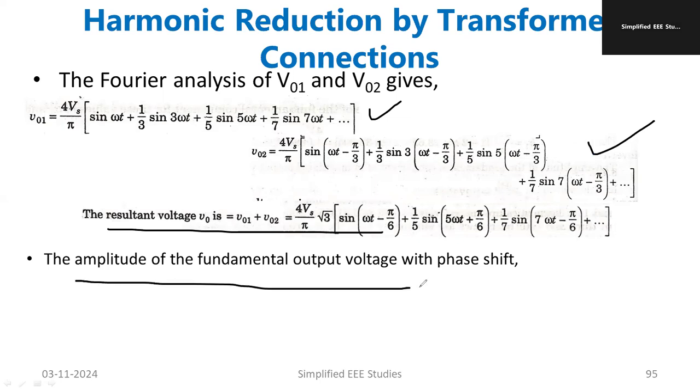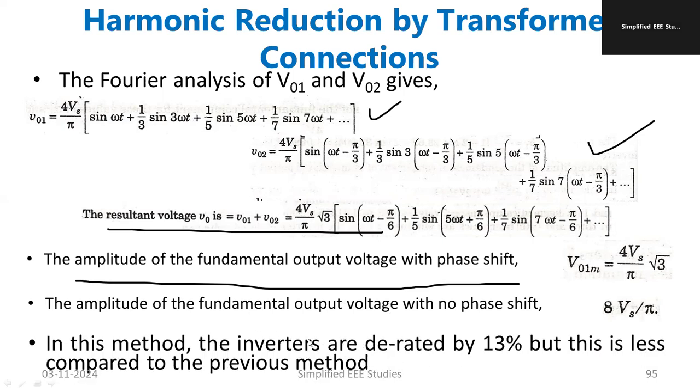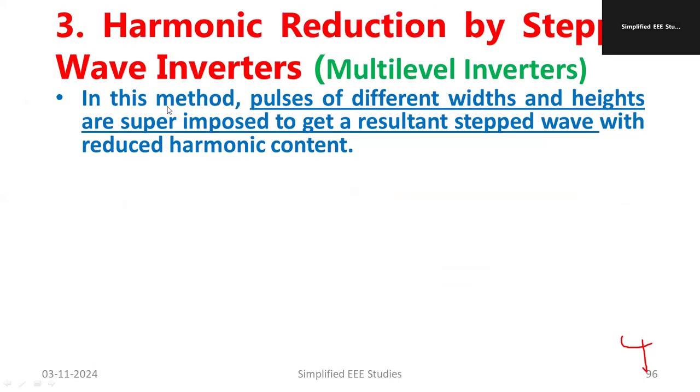Amplitude of the fundamental output with the proper phase shift. You can express v0m is equal to 4 Vs by pi into root 3. That is equal to 8 Vs by pi. So in this method the inverters pre-rated by 13 percentage of its less compared to previous method. So previous method we studied about the PWM technique. Compared to PWM technique almost 13 percentage of the harmonic reduction can be happened by using the transformer connections. It's a special type of transformer you know like isolation transformer.